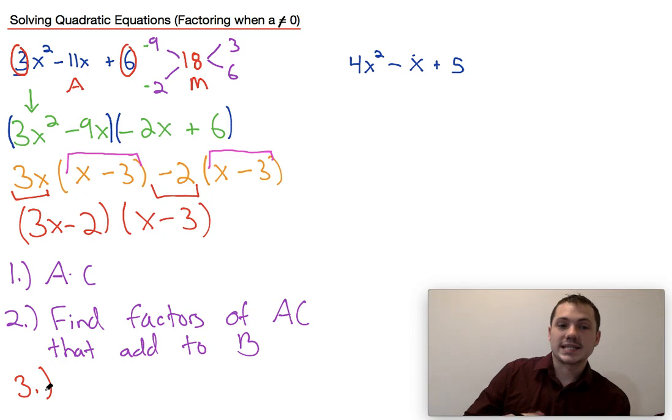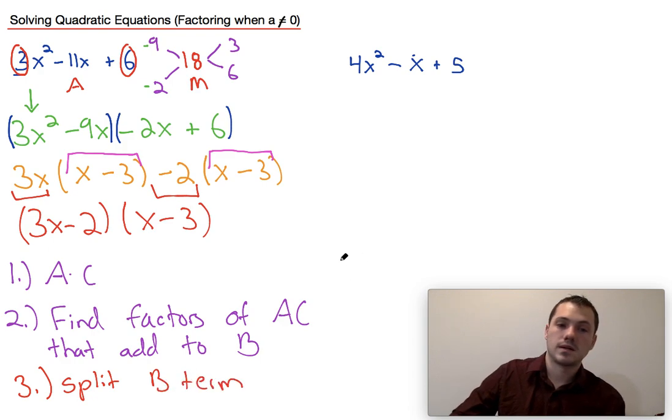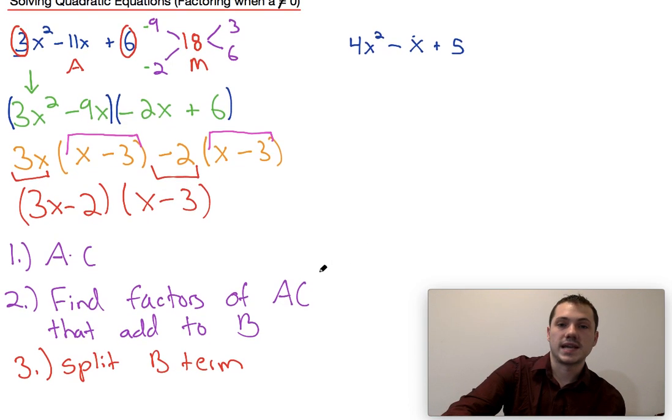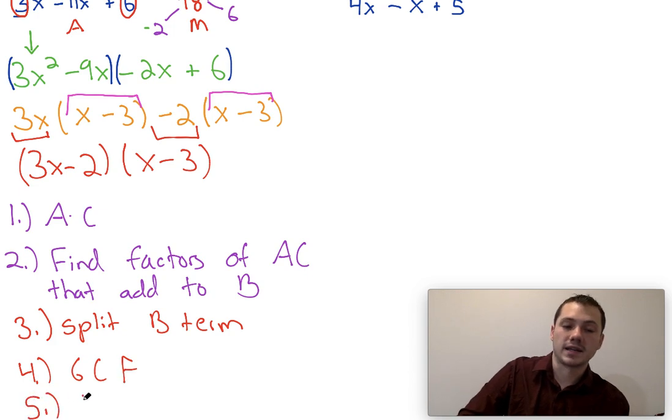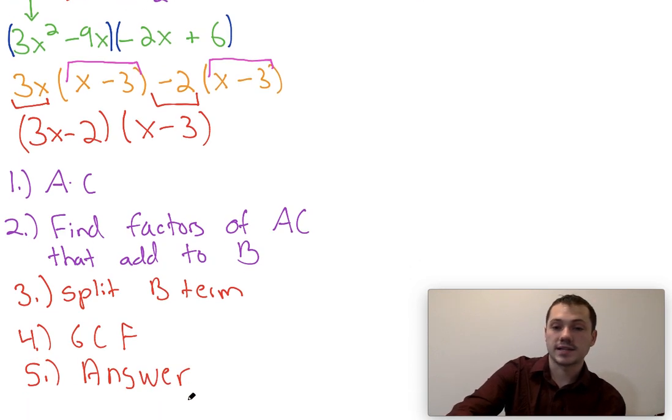Step 3. After we do that, we split the term. We take the greatest common factor and then we finally write it out in factored form to have our final answer.